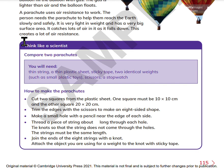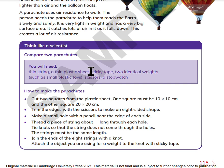Think like a scientist — compare two parachutes. You will need thin string, a thin plastic sheet, sticky tape, two identical weights such as small plastic toys, scissors, and a stopwatch.